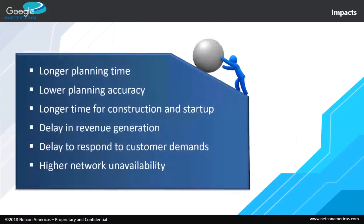What are the impacts? Network planning activities become more time-consuming as they are mainly done manually. Planning accuracy is compromised due to multiple sources of information and lack of standardization of project rules and materials. Inefficiency in the planning stage also negatively impacts the construction and startup phases, adding extra delays due to poor construction plans that do not bring all the details required to carry out field activities. These factors delay revenue generation, directly affecting the business plan and the relationship with investors and stakeholders.